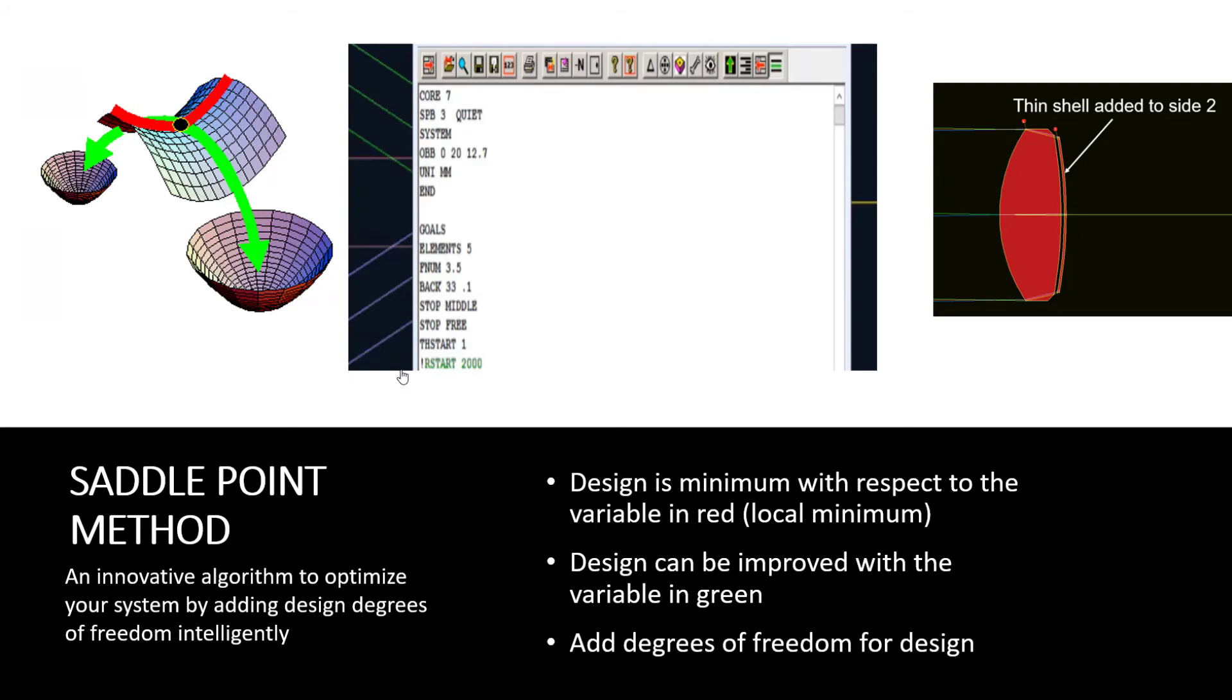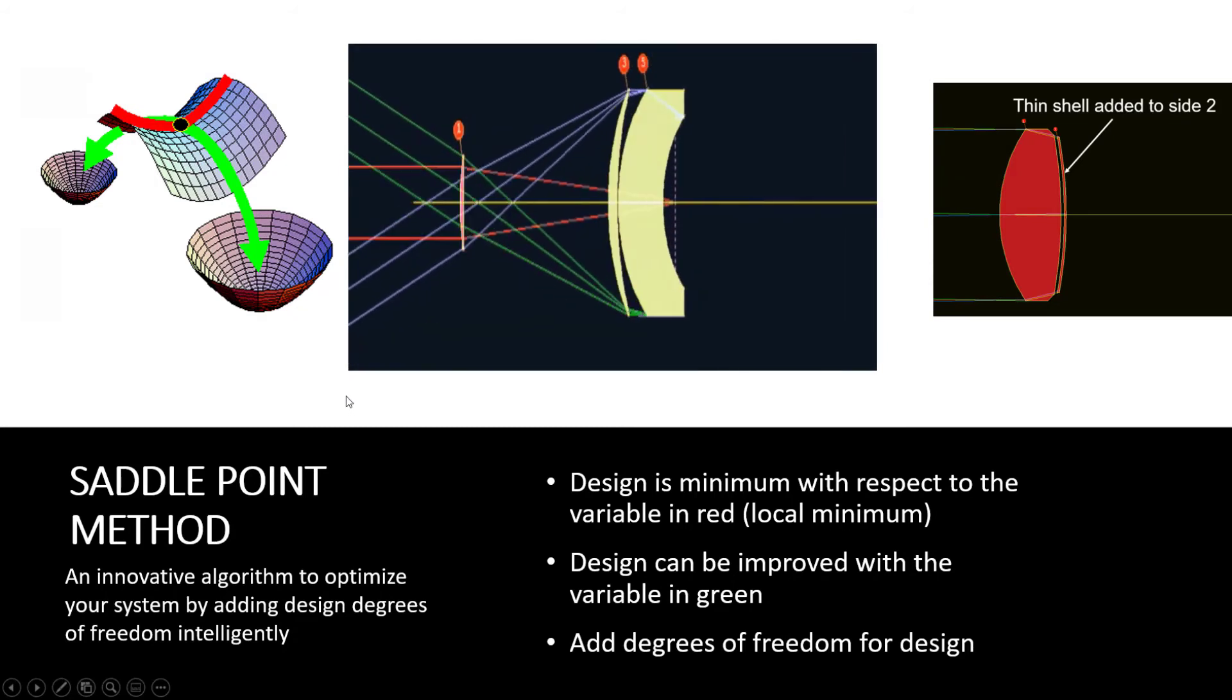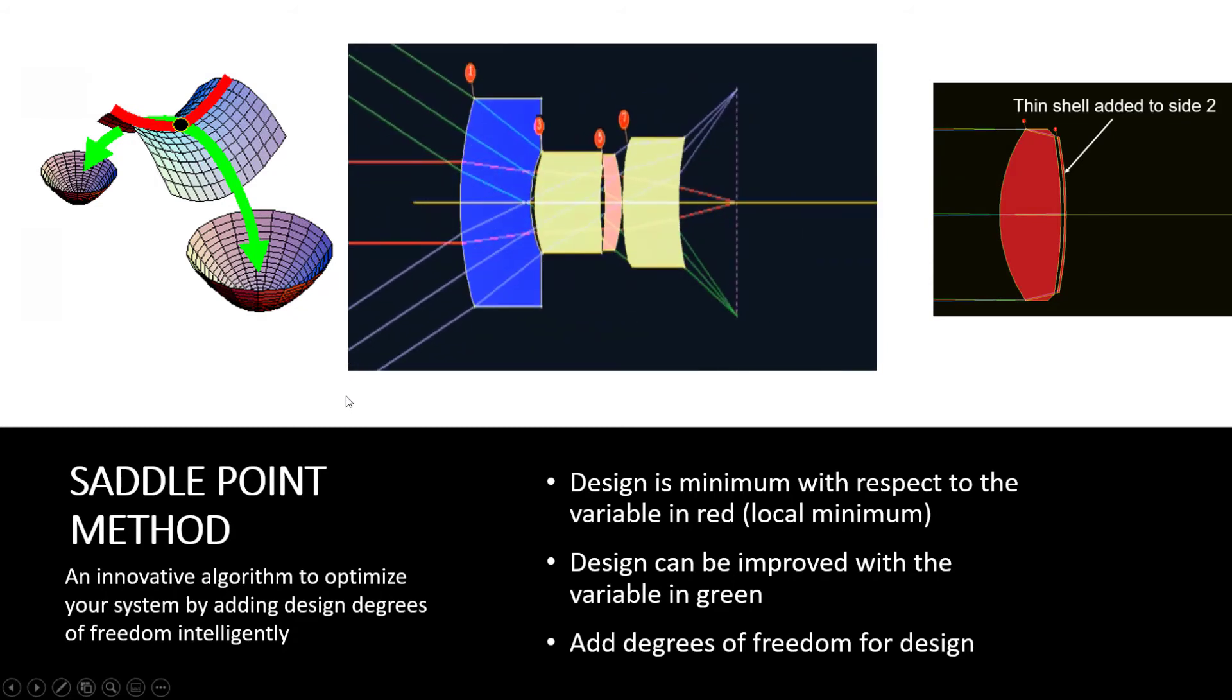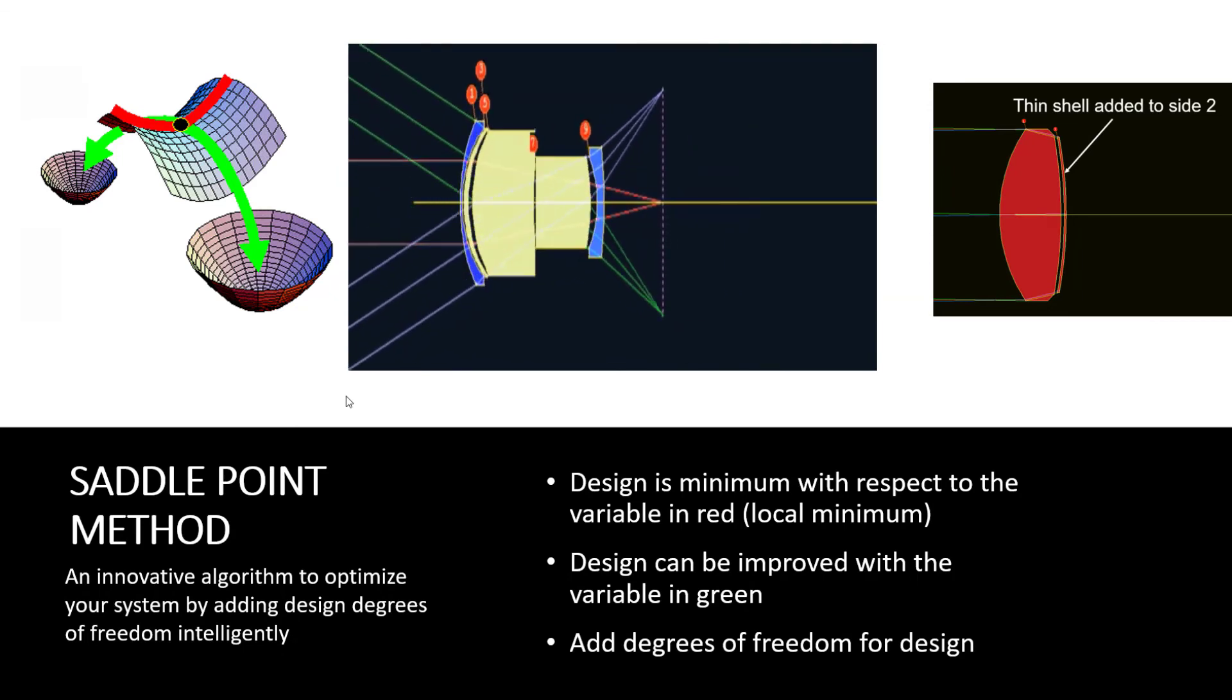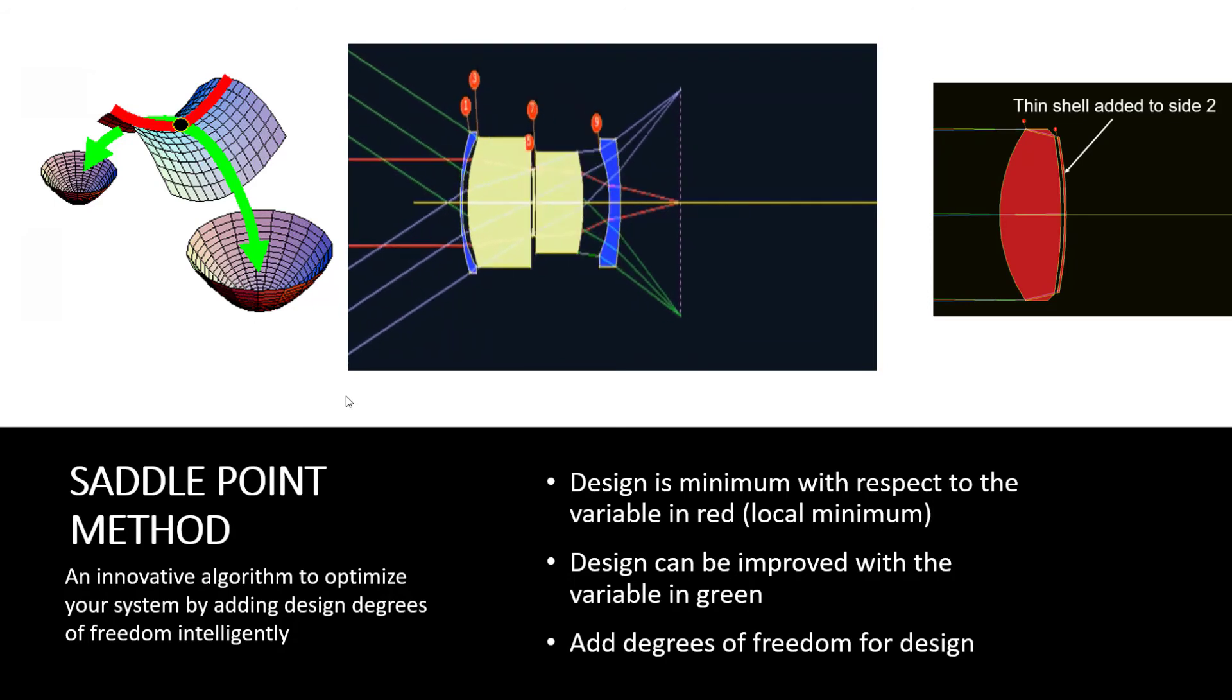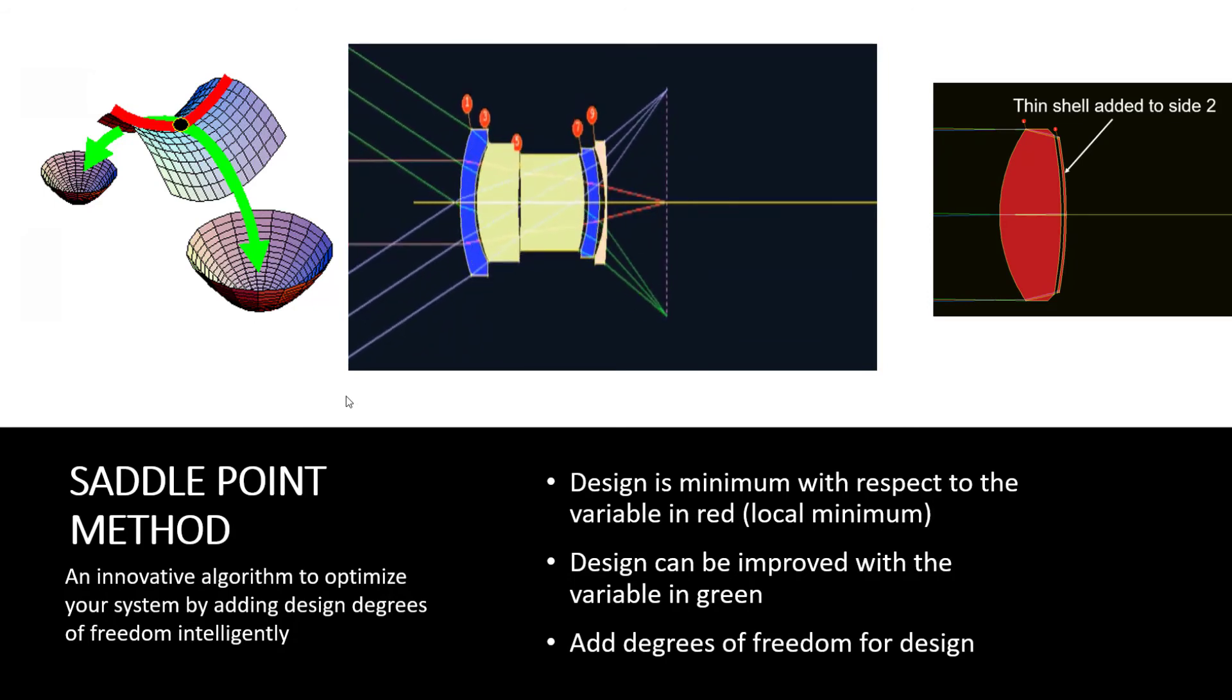Here is a simple script to build a five-element system using the saddle point method. Let's run it. You see that Synopsys is adding lenses to the system, one lens at a time. One, two, three, four, five. And at the same time, it is changing the lens parameters to optimize the system until it is built completely.